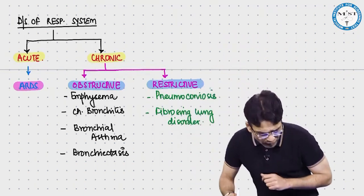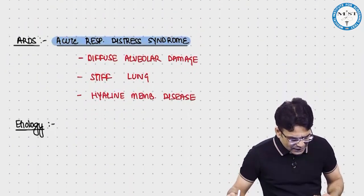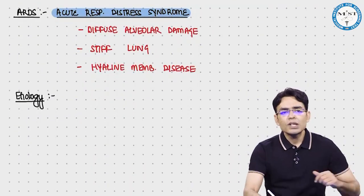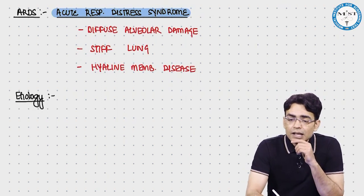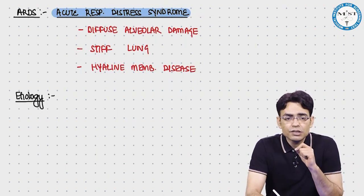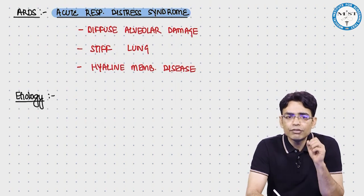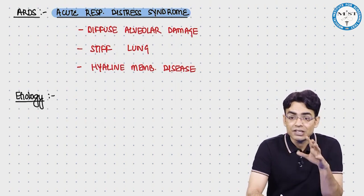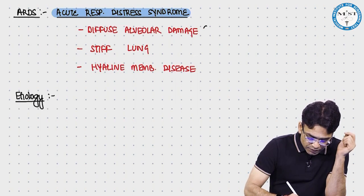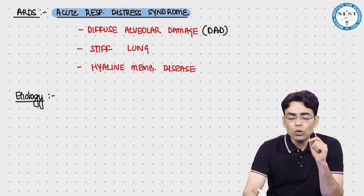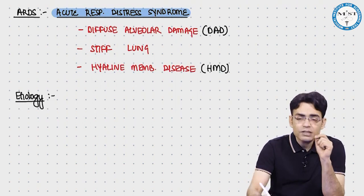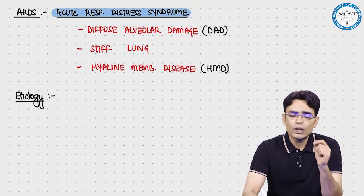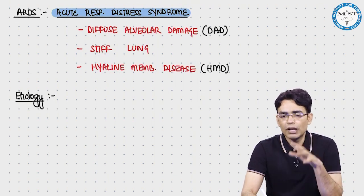ARDS stands for acute respiratory distress syndrome. It is also called diffuse alveolar damage (DAD), stiff lung, and hyaline membrane disease. We'll understand why it carries all these names as we go through the pathophysiology.